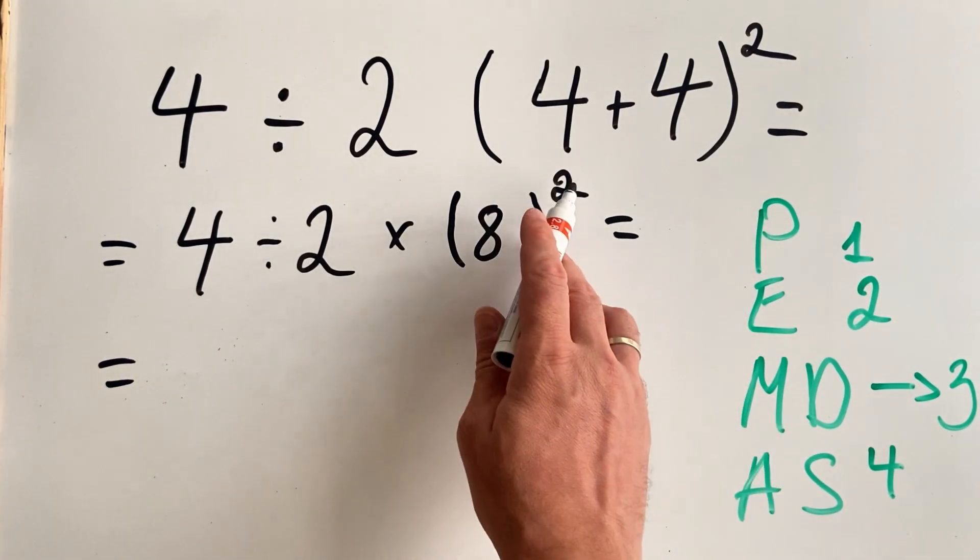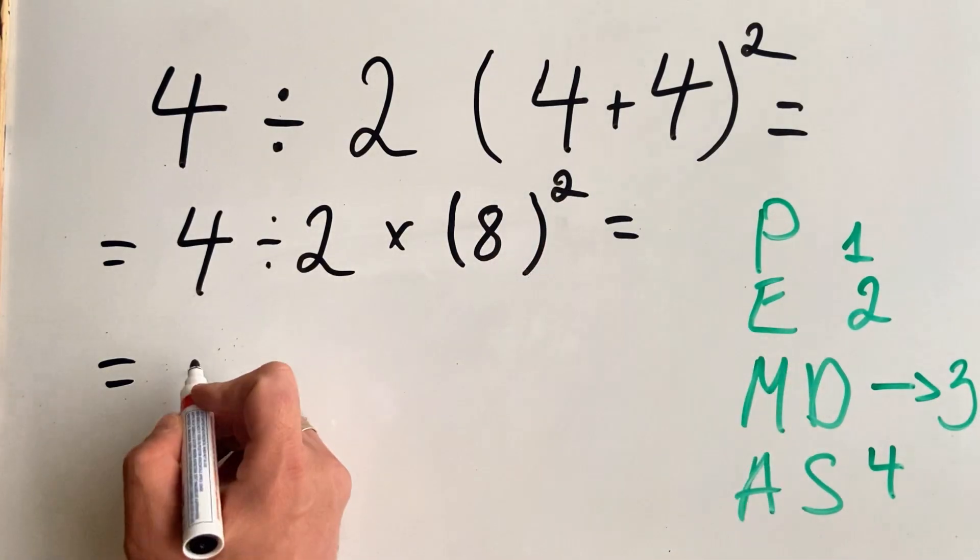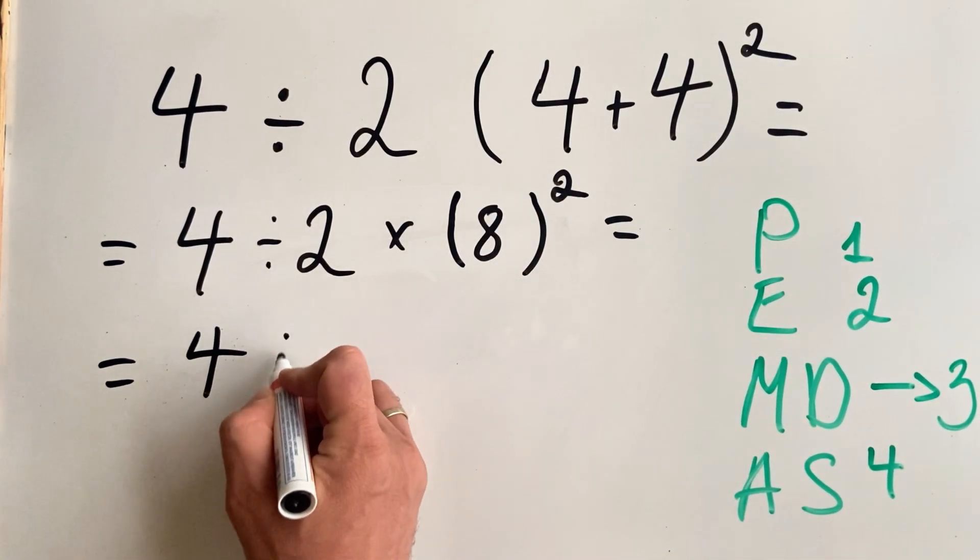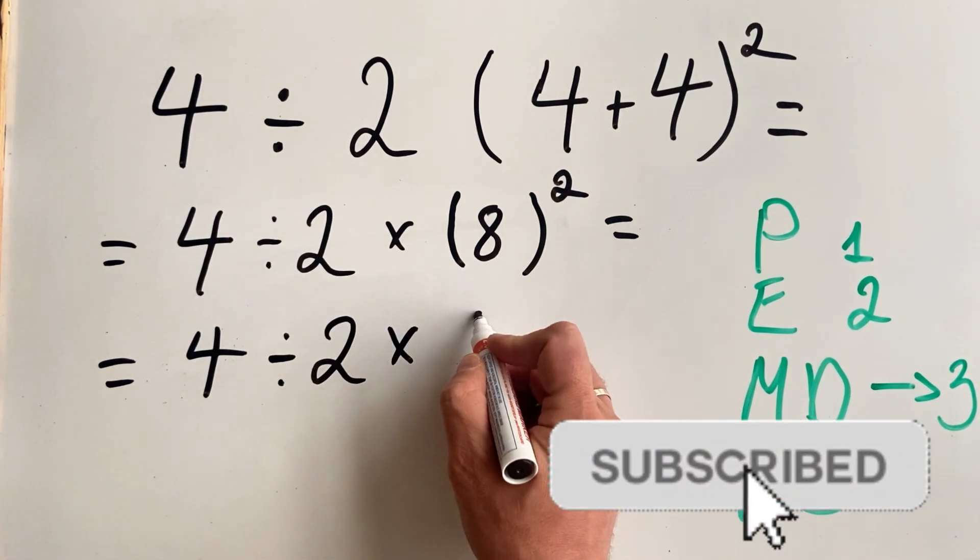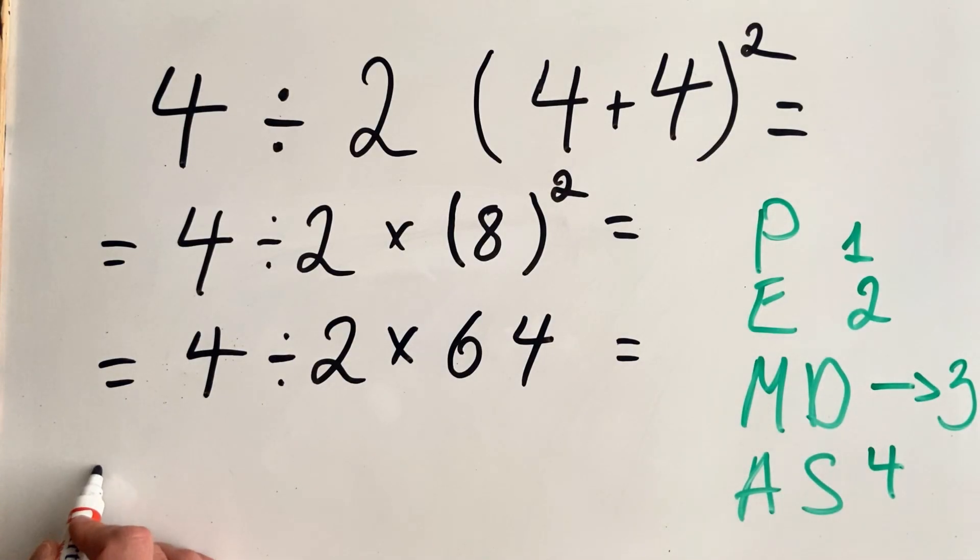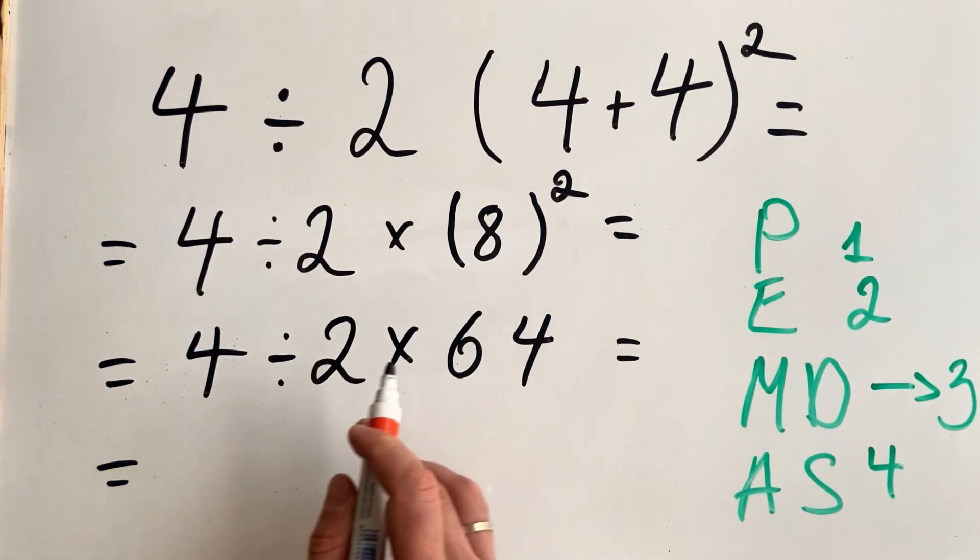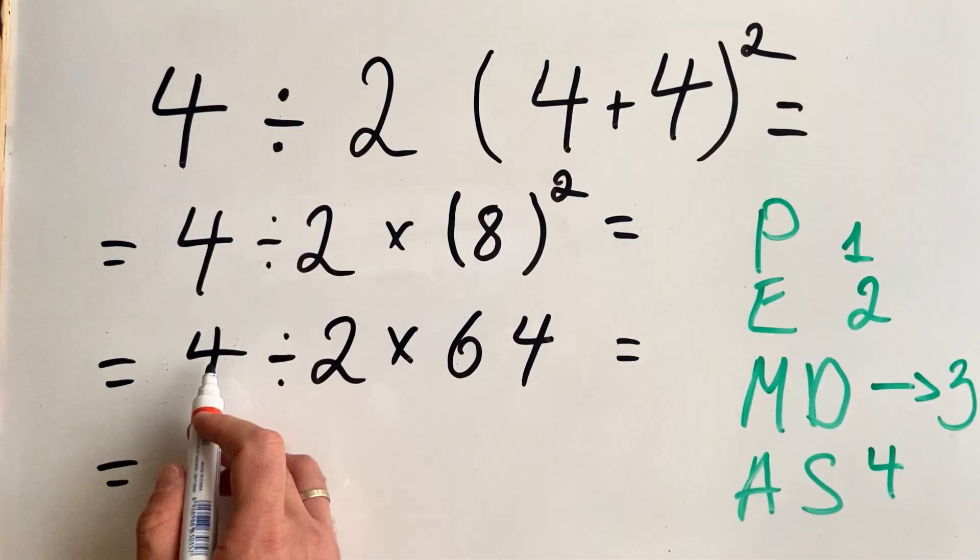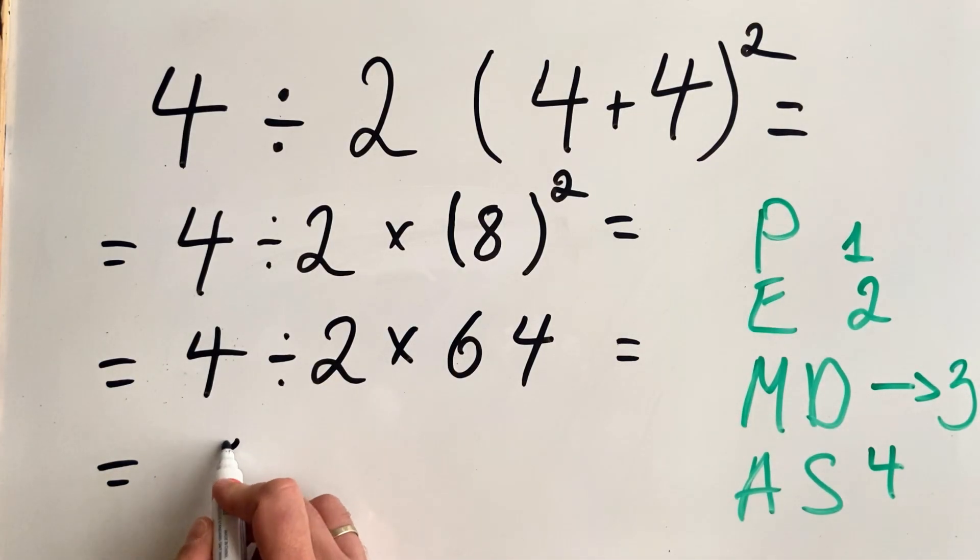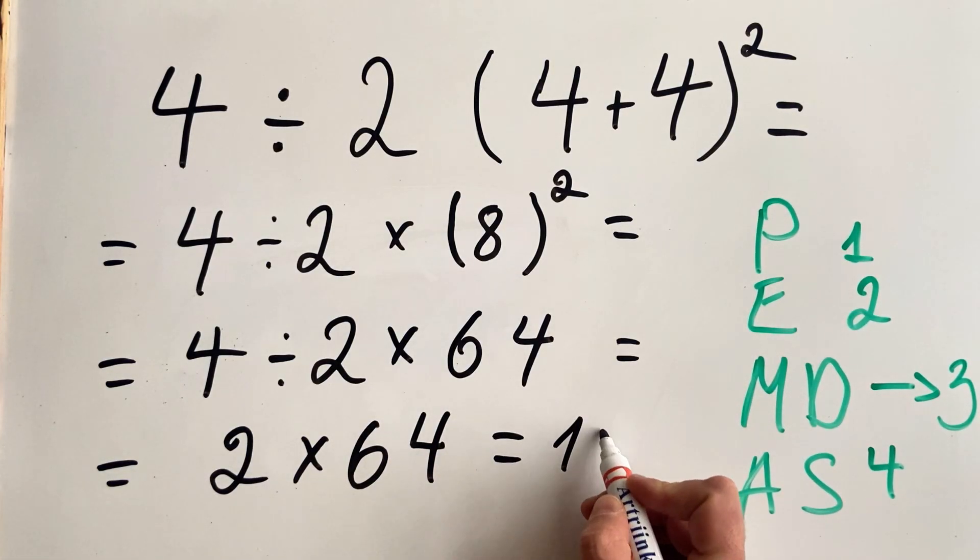Now we must do exponents. In this case, we have only one number, but still, 8 squared is 64. And we get 4 divided by 2 multiplied by 64. Okay, now we have the simple multiplication and division operation, and we need to do it from left to right. So first we do division, then we do multiplication. So 4 divided by 2 is 2 multiplied by 64, and that is 128.